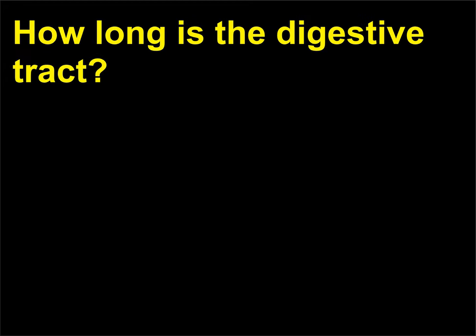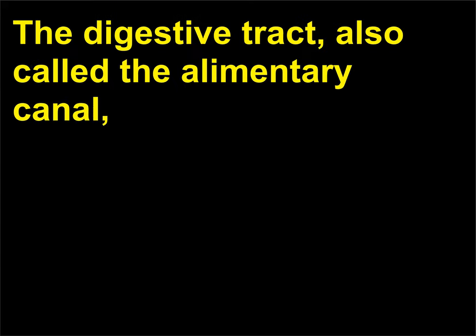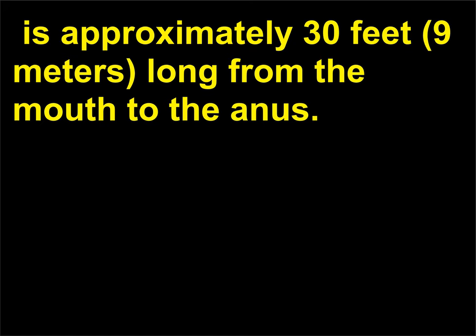How long is the digestive tract? The digestive tract, also called the alimentary canal, is approximately 30 feet (9 meters) long from the mouth to the anus.